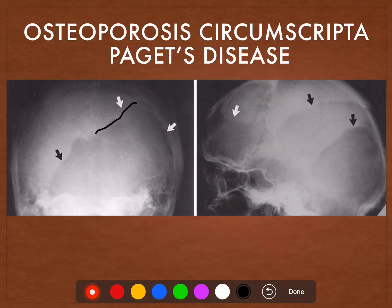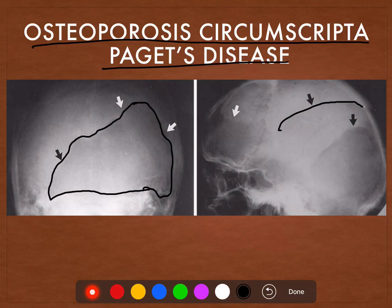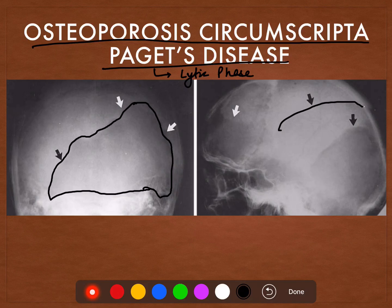Here we see this large well-defined lytic lesion in the skull. This large well-defined lesion is known as osteoporosis circumscripta and is characteristic of Paget's disease — to be precise, it is characteristic of the lytic phase of Paget's disease. Paget's disease has three different phases: the lytic phase, the mixed phase which has both lytic and blastic activity, and then the sclerotic phase.